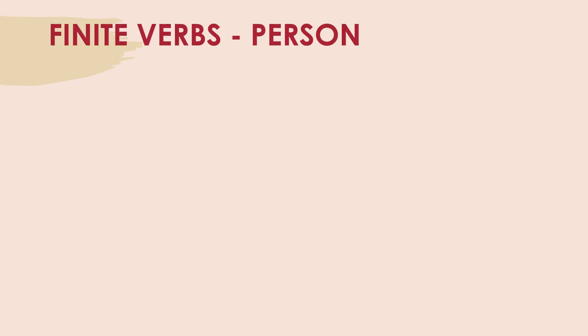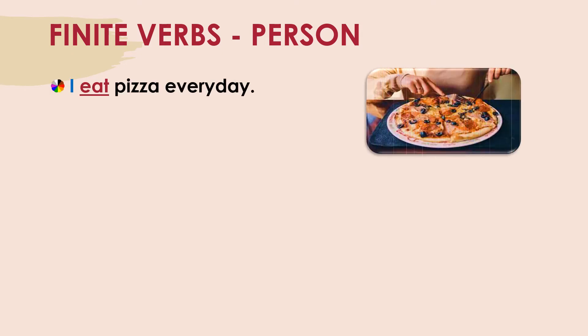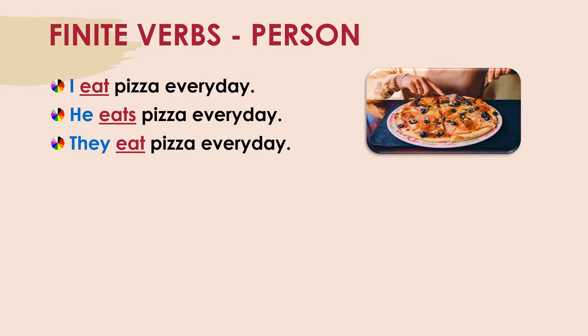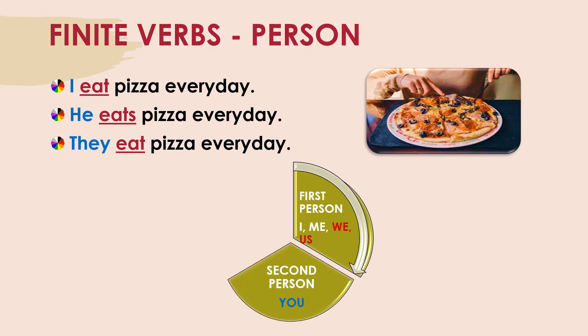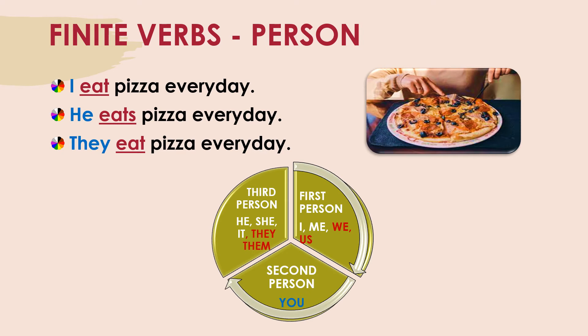Now let us see how finite verbs modify or change themselves according to person — first person, second person, and third person. I eat pizza every day. He eats pizza. See the verb being modified according to first person and third person. They eat pizza every day. In the first person we use I, me, we, and us. The second person is 'you,' and even in the plural it is 'you.' The third person uses he, she, it, and in the plural, they and them.